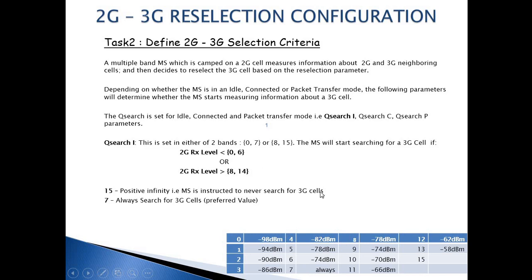If we set a value of 12, it would imply that if the measured RX level from the 2G cell is greater than minus 62 dBm, the mobile station should start searching for a 3G cell. We could also set a value of 15, which implies positive infinity, meaning the mobile station will never search for a 3G cell. Or we could set it to 7, which implies the mobile station should always search for a 3G cell regardless of its measured RX level value. This is the preferred value.